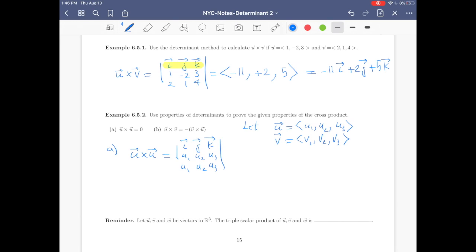So u cross u is just i j k, u1 u2 u3, u1 u2 u3. However, if you remember, by properties of determinants, if you have two equal rows, then the determinant is zero. Very interesting fact that u cross u is indeed zero. However, it seems I forgot to put a vector notation right here.